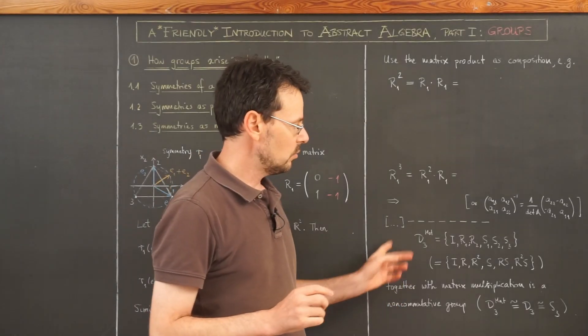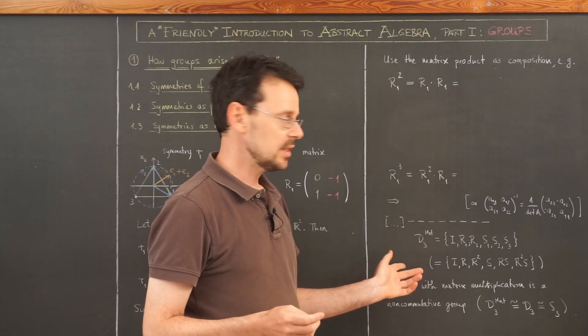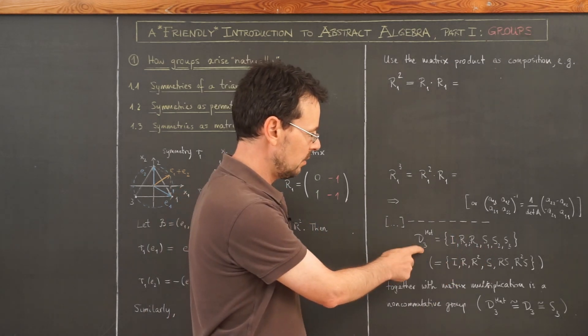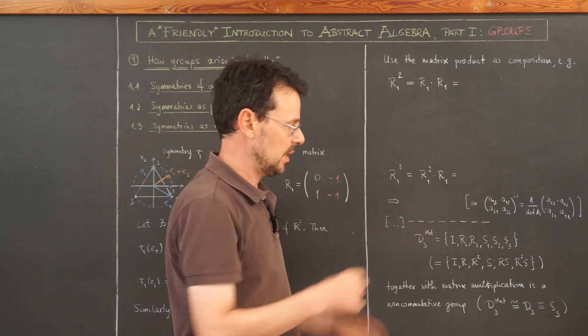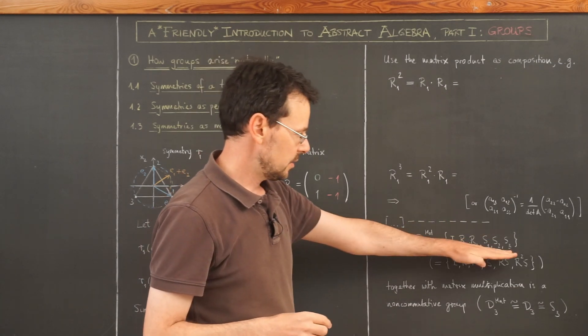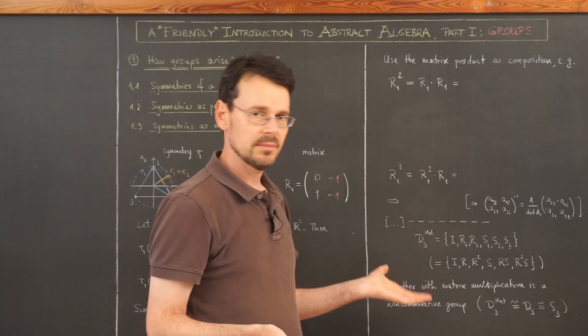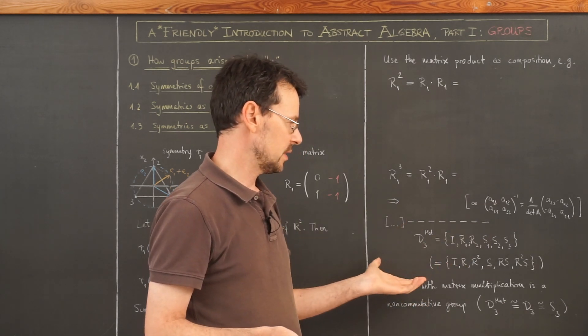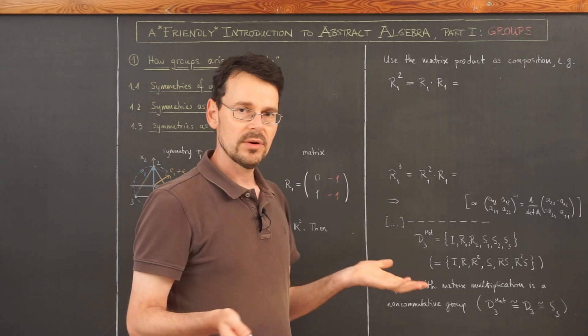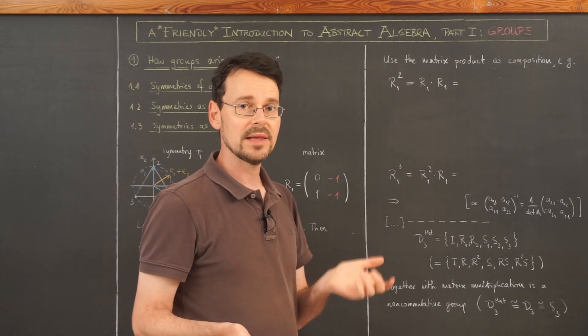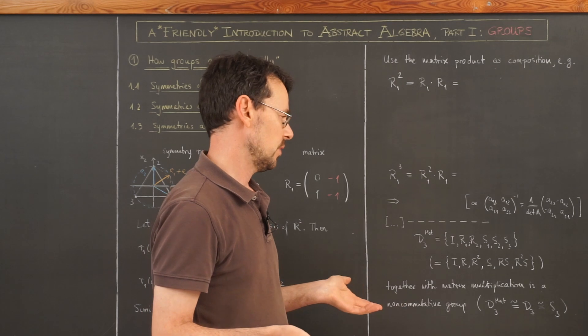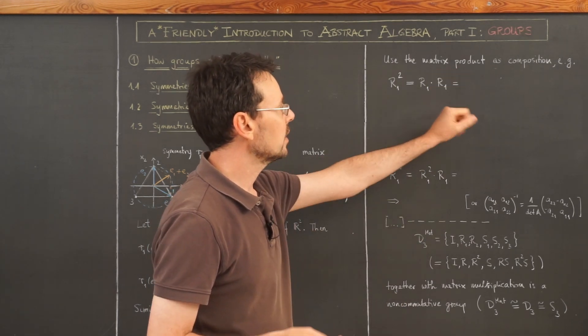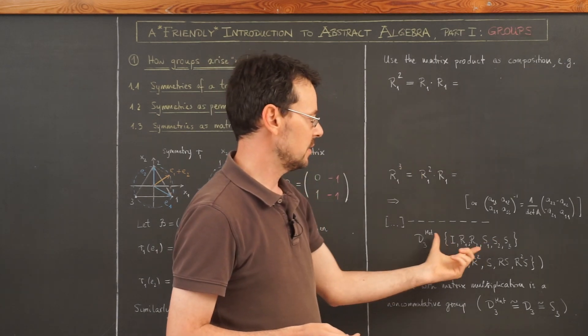If you do this, you will end up with six matrices. And the set of these matrices I denote by D3 and here mat for matrix. And so we have a set with six matrices. Now we want to make a group out of this set. Well, if you heard anything about matrices before, you know that you can multiply them using the matrix product. So we take the matrix product as composition on this set here.